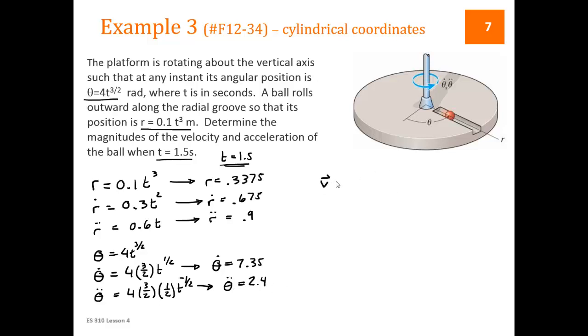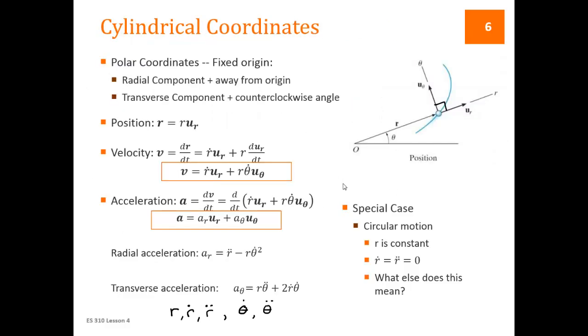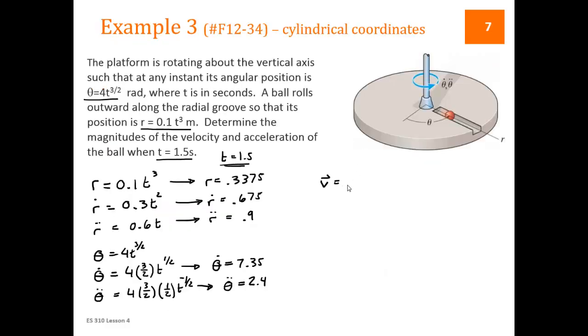So velocity is equal to ṙu_r plus rθ̇u_θ. We have all of these values. So the magnitude of v is equal to the square root of ṙ, which is 0.675 squared, plus r, 0.3375, times θ̇, which is 7.35, both of these squared, square root. Plug those into the calculator, you get 2.57 meters per second.